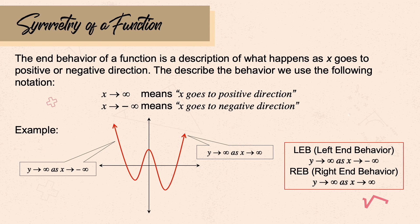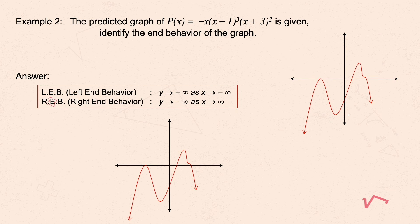Let's have another example. The predicted graph of P(x) = -x · (x - 2)³ · (x + 3)² is given below. Identify the end behavior of the graph. Using the end behavior of the graph, the left end behavior goes to the third quadrant.